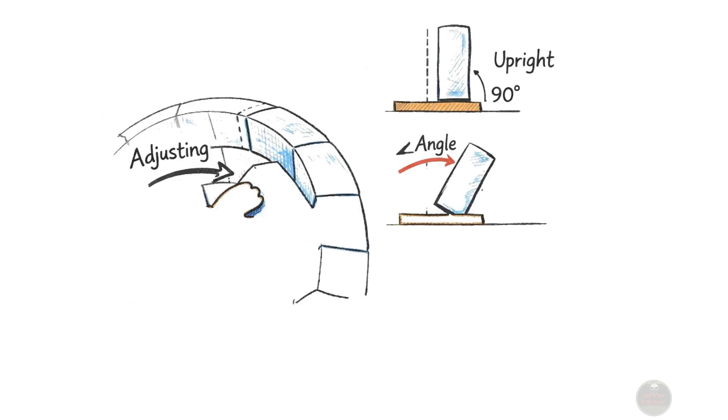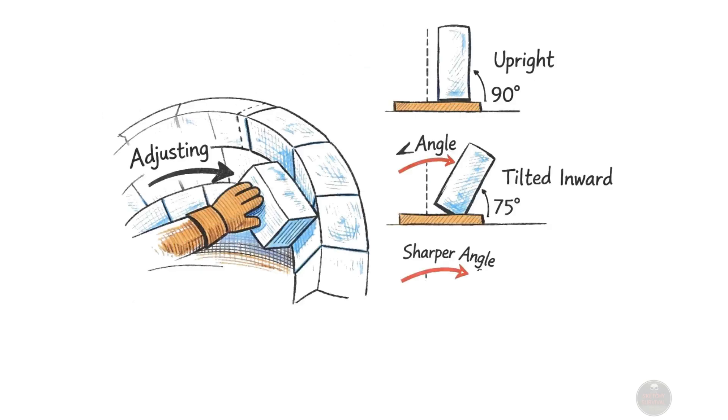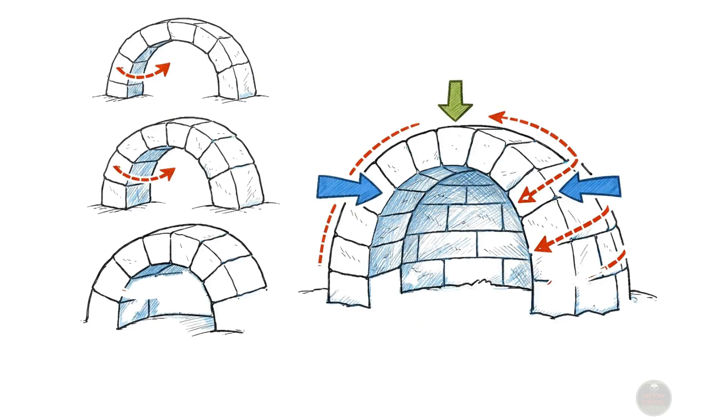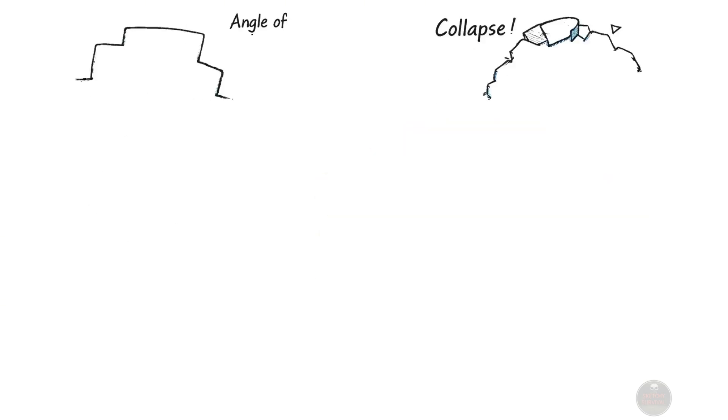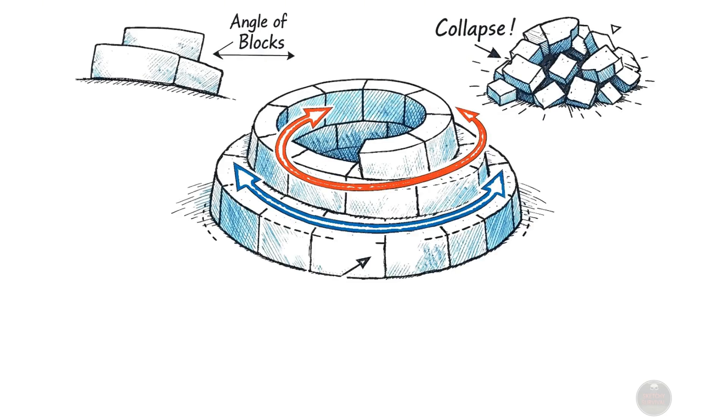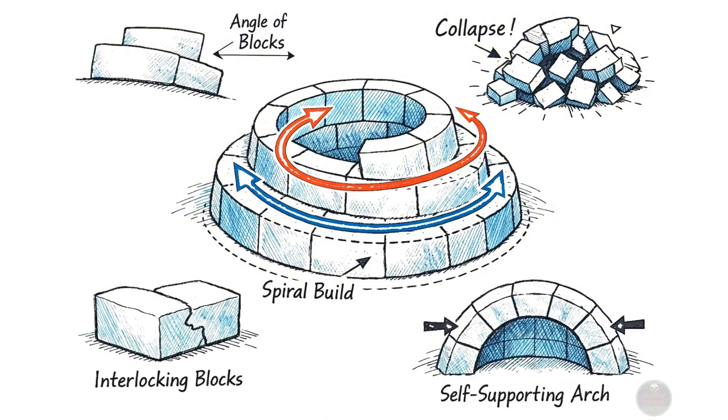This unique construction method allows the builder to constantly adjust the angle of the blocks, creating that perfect self-supporting arch as the structure grows taller. The spiral technique is absolutely fundamental to an igloo's stability, representing a critical piece of engineering that prevents collapse.